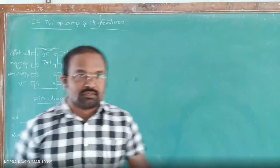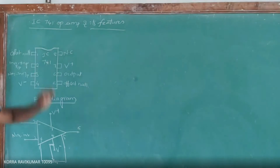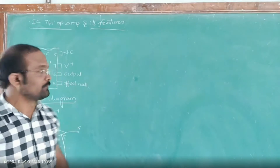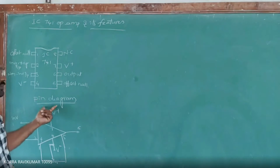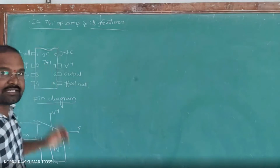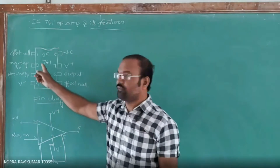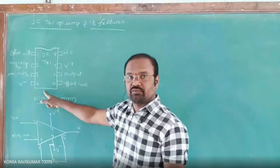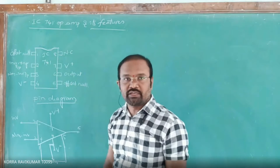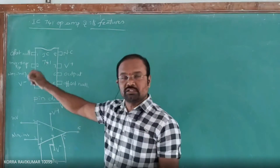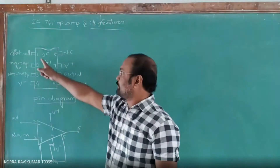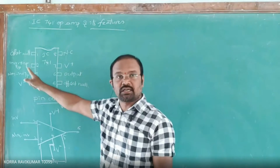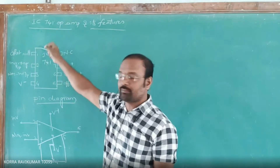IC 741 is the IC we are going to use as the operational amplifier. Its pin diagram consists of totally eight pins. Each pin has its own identity. Pin one is offset null pin, pin two is inverting input, pin three is non-inverting input of the op-amp.